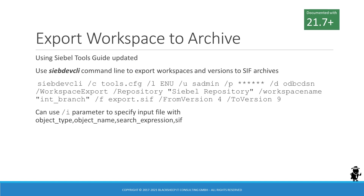The Using Siebel Tools Guide for Siebel CRM 21.7 now includes documentation on how to use the Siebel CLI command line utility to automate the export of CIF files. The utility takes several parameters, including the name of a workspace, AFRM version, and ADA version, to allow developers to export objects to CIF files. In addition, an input file can be specified which must include the object type, object name, search expression, and CIF file name. The input file allows further filtering of the object definitions to export.